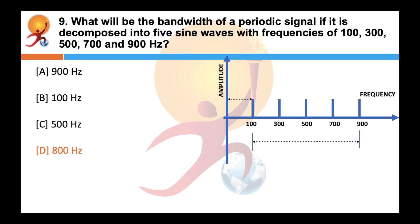Kindly look at the picture to understand what exactly happens. The bandwidth is equal to highest frequency minus the lowest frequency. In this case, bandwidth will be equal to 900 minus 100 equals 800 Hertz.